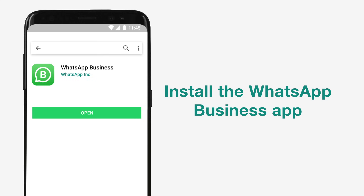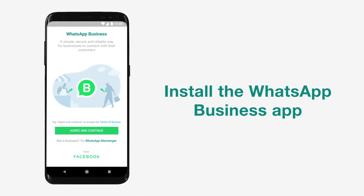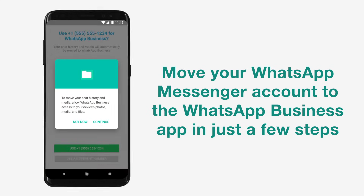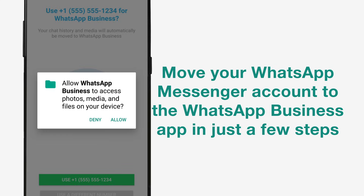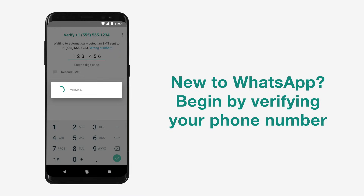Install the WhatsApp Business App from the Google Play Store or Apple App Store. If you already have a WhatsApp Messenger account, you can move your media and chat history to the WhatsApp Business App in just a few steps. If you're new to WhatsApp, verify your number to create an account.